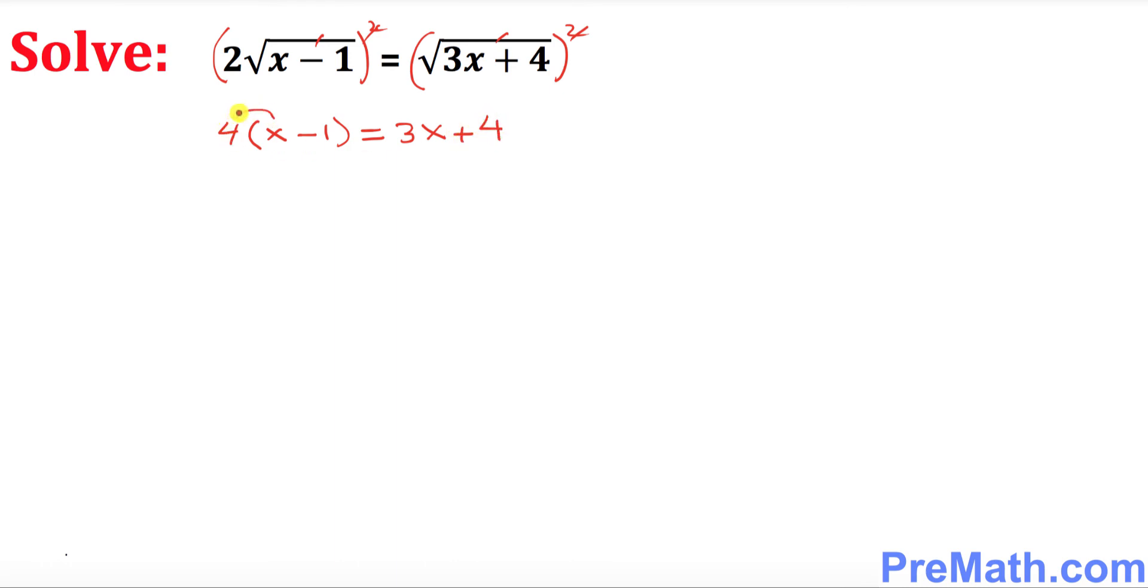Now I want you to go ahead and distribute this one. So that is going to simply become 4x minus 4 equals to 3x plus 4.